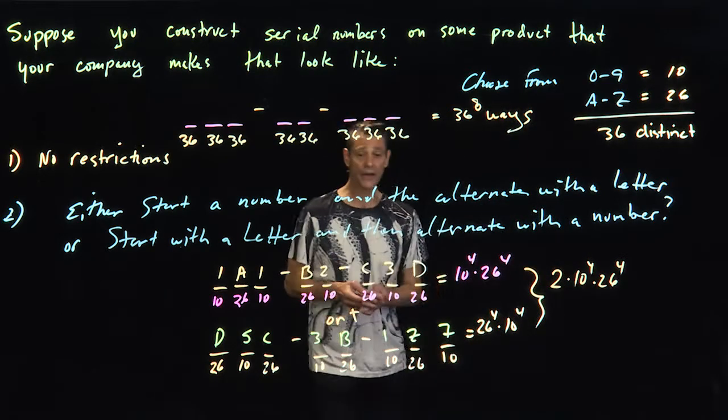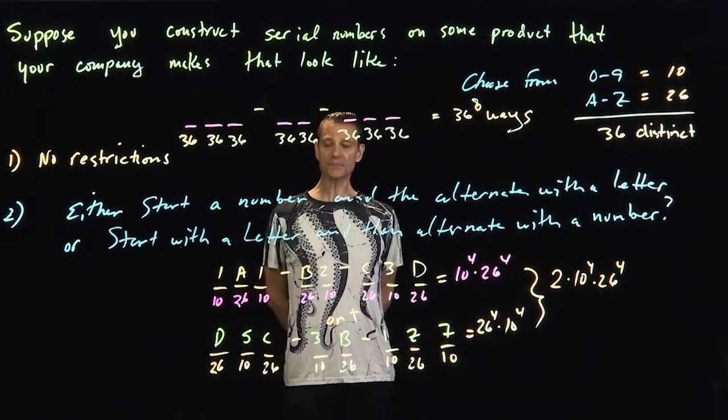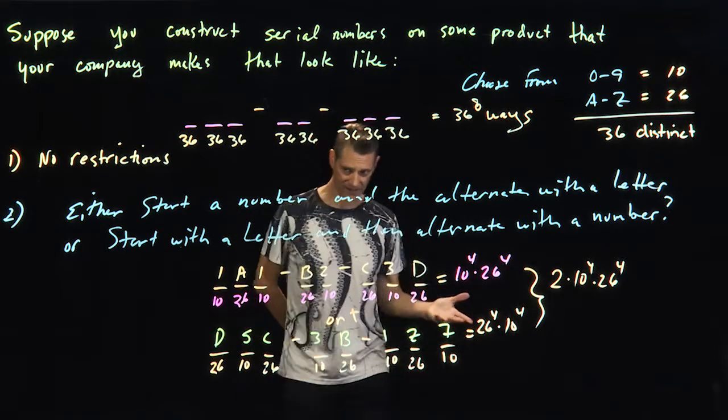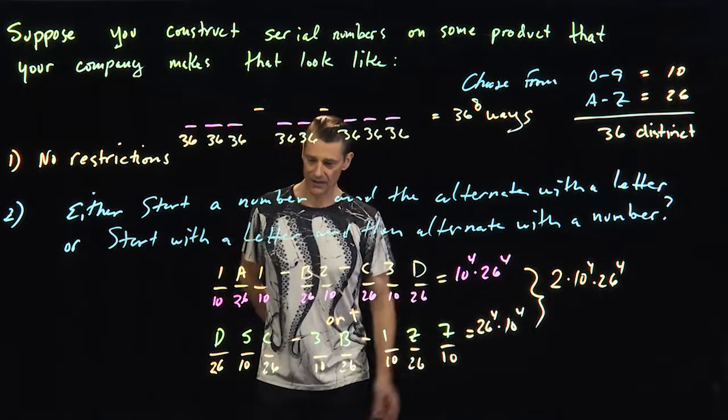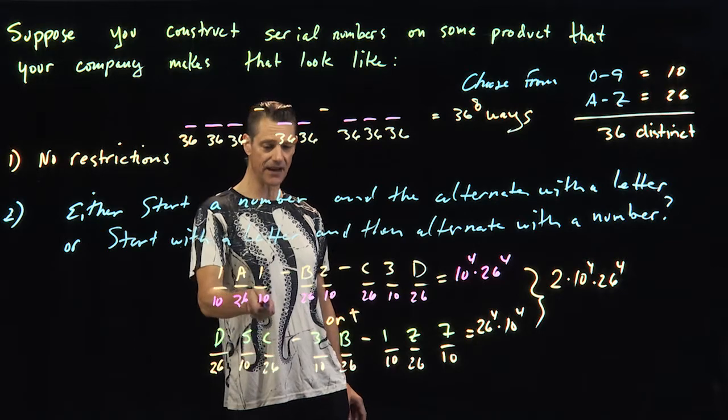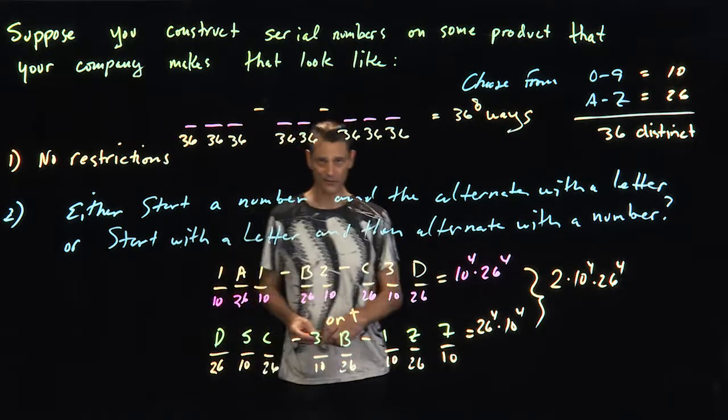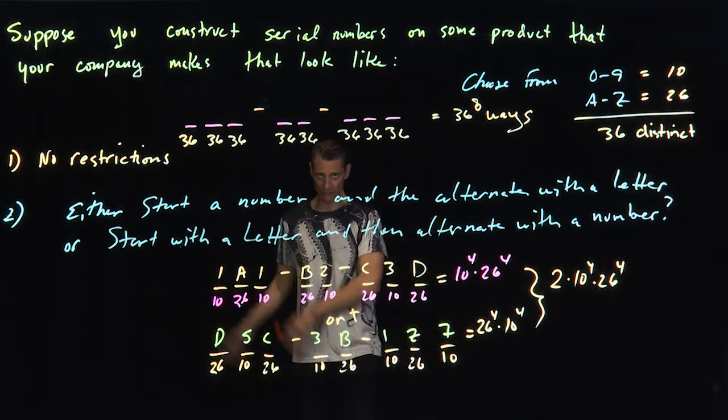So on your quiz, what I'm likely to do is give you a problem like this. How would this be different if they had to be distinct? And just think about it. If they were distinct, then this would be 10, 26. Then this would have to drop to 9, 25, etc. Okay, more exciting stuff coming right at you.